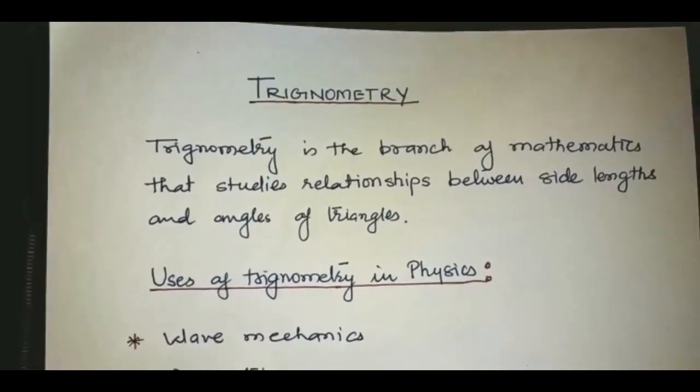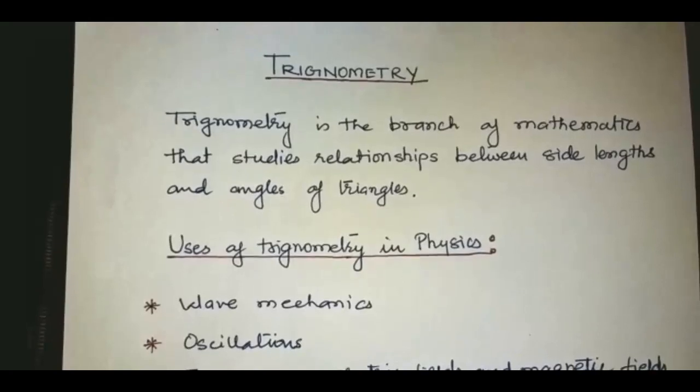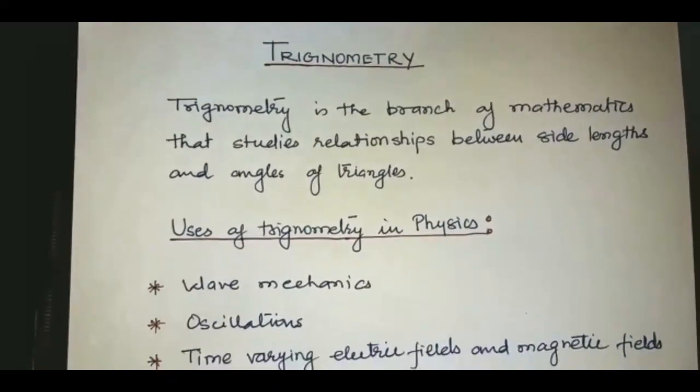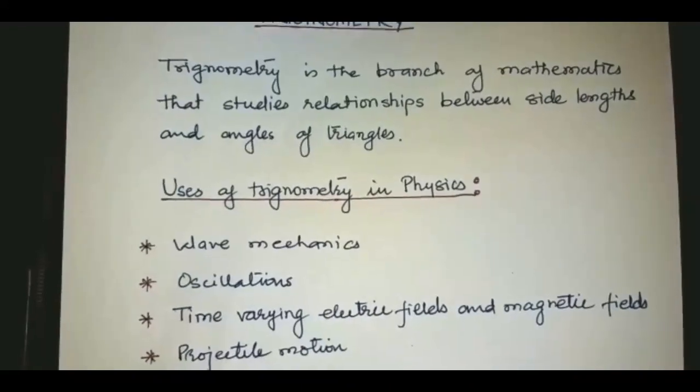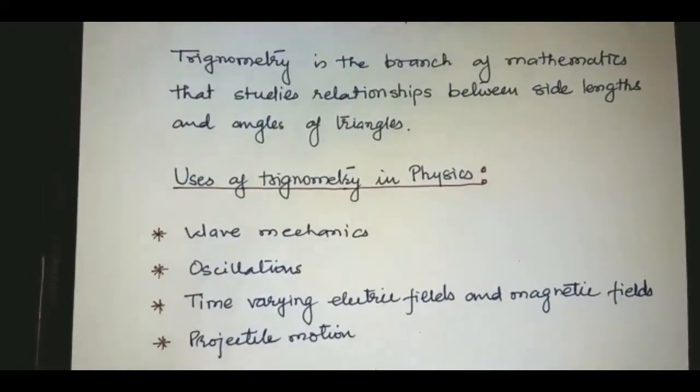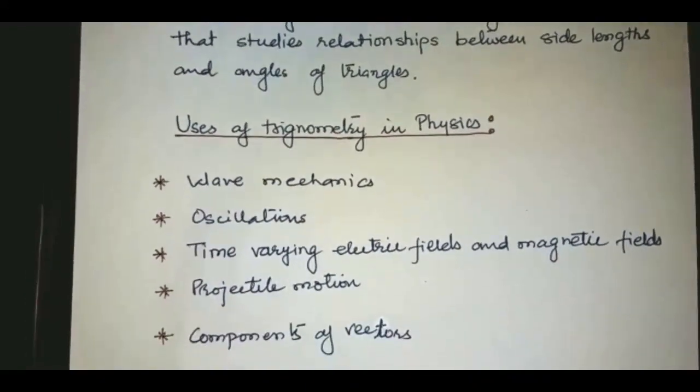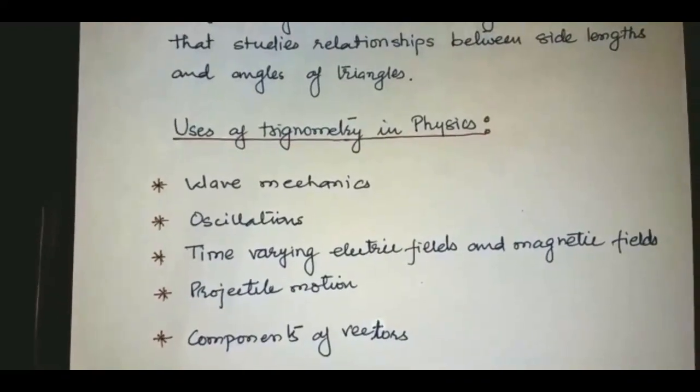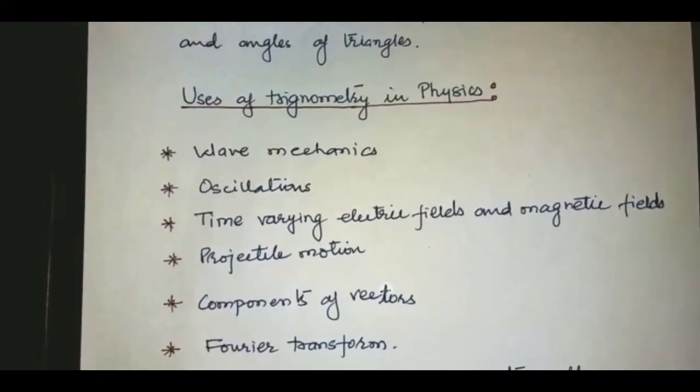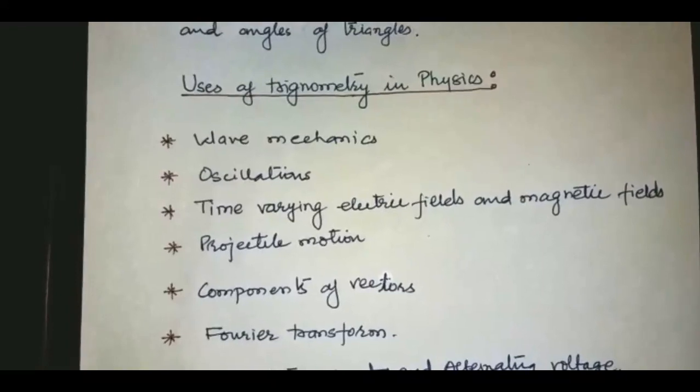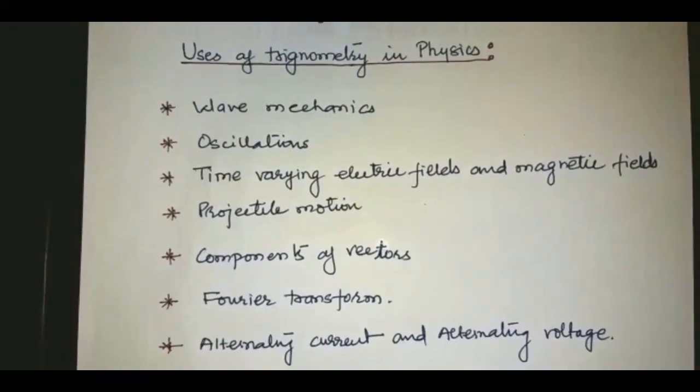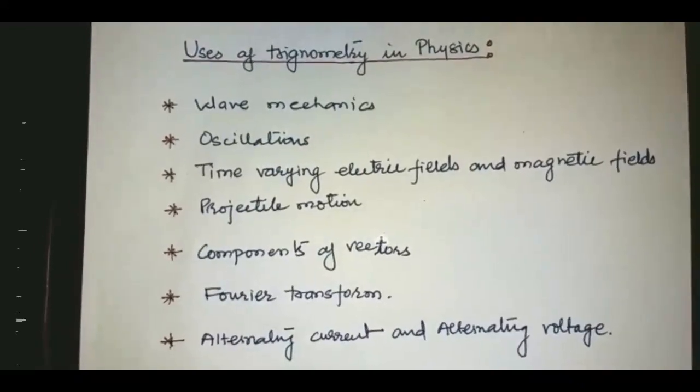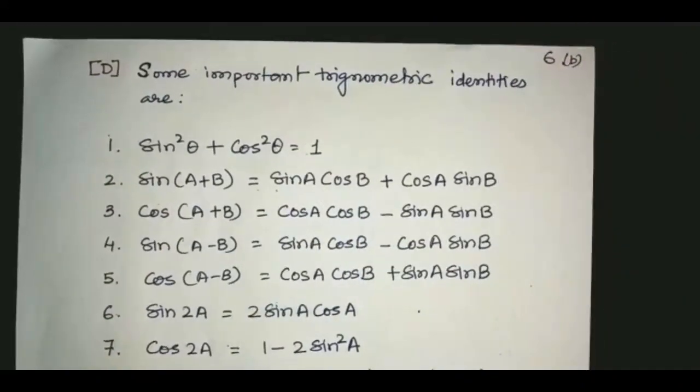For example, it is used in wave mechanics to study oscillations, in the study of time-varying electric fields and magnetic fields, to study projectile motion, to find the components of vectors, in the study of Fourier transform, and to study alternating current and alternating voltage.